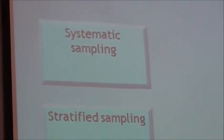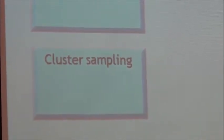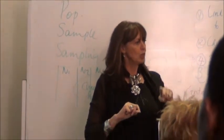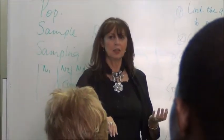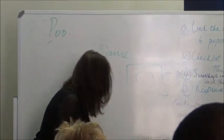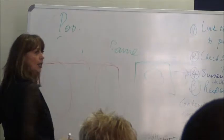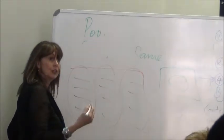The next method is cluster sampling. Cluster sampling takes the population and divides it into little sub-populations — clusters. Every one of these clusters should have all the characteristics of the overall population in them. Then you choose a number of these clusters and that forms your sample.